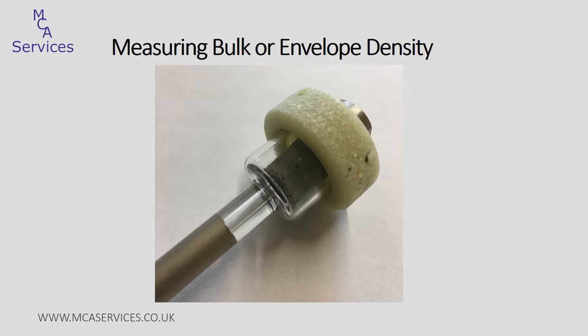The first thing we do is to weigh the sample. We then load it into a penetrometer — that's this glass bulb here with a stem attached to it. It's sealed with a metal cap at the top and then a green ring to hold everything in place. The penetrometer has also been calibrated for its volume, so we know the volume of the empty penetrometer. It will now be loaded to the Autopore.